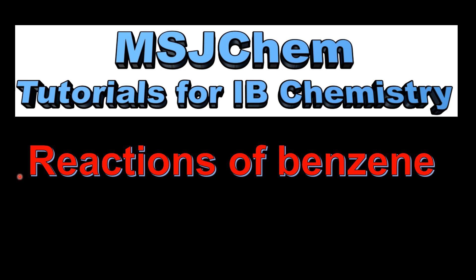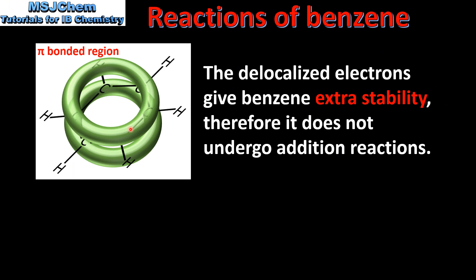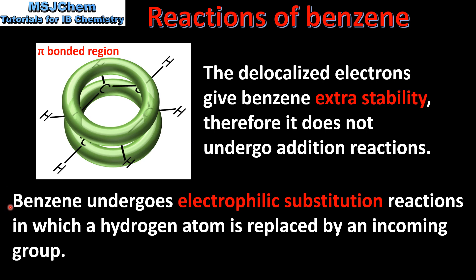This is MSJChem. In this video I'll be looking at the reactions of benzene. In the previous video we looked at the structure of benzene. Benzene has delocalized electrons which are found in two pi bonded regions which are above and below the plane of the ring. The delocalized electrons give benzene extra stability, therefore it does not undergo addition reactions like the alkenes. Instead, benzene undergoes electrophilic substitution reactions in which a hydrogen atom is replaced by an incoming group.